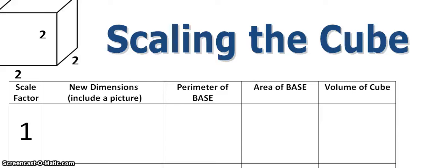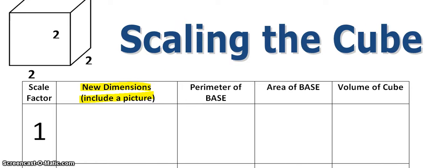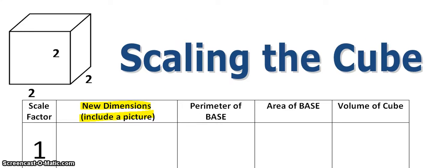Hi everyone. So far when we've been talking about scaling an object, we've been talking about scaling the dimensions. So if I wanted to scale this cube, for example, this is a 2 by 2 by 2 cube — 2 on all sides.